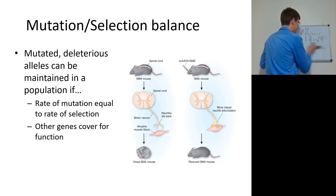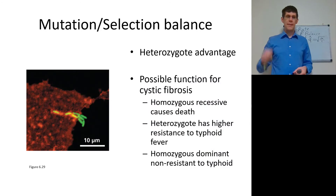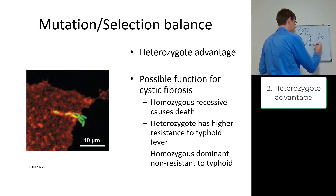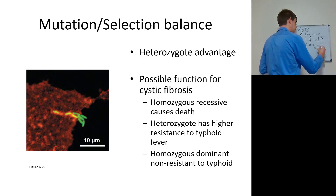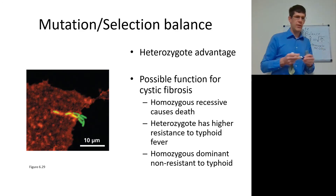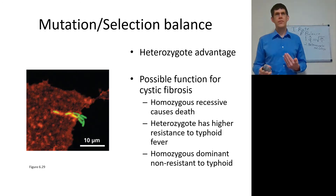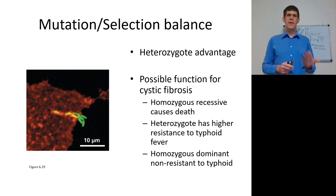There are other reasons alleles can persist in a population through the mutation-selection balance — specifically heterozygote advantage. This means heterozygotes have higher fitness. In a population with homozygotes and heterozygotes, the homozygous recessive allele may be lethal — like cystic fibrosis, a very common cause of death in Caucasians.